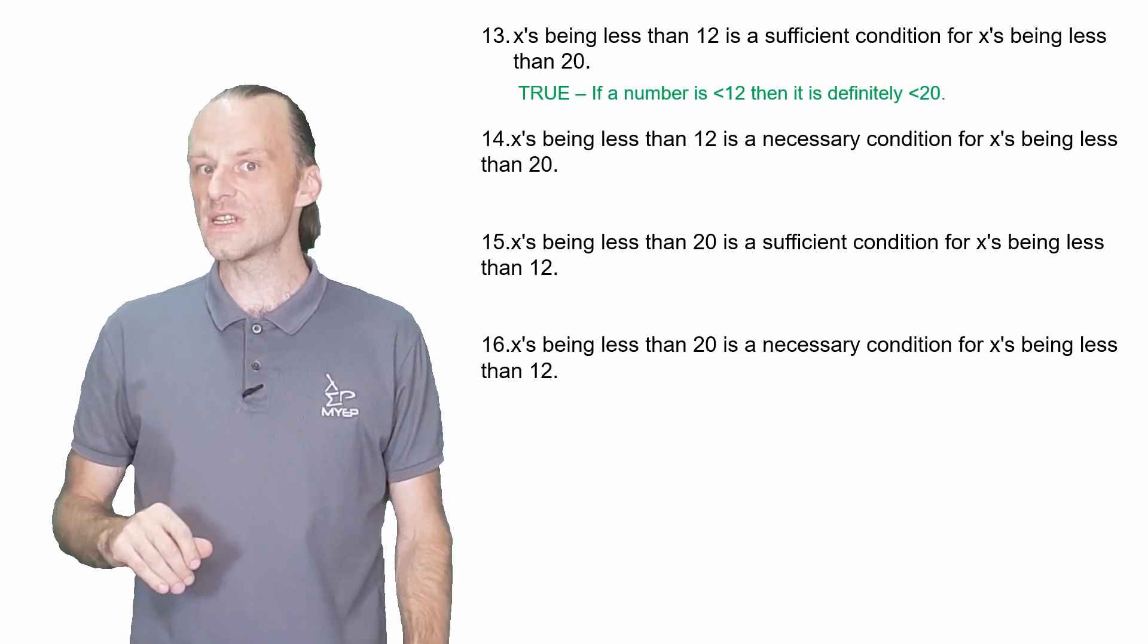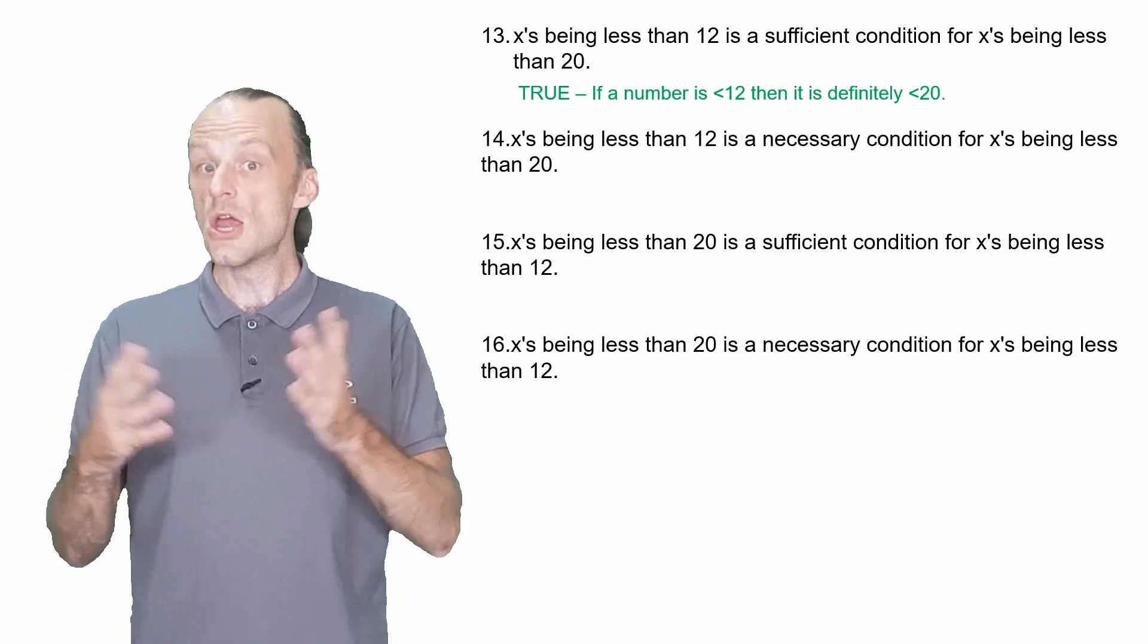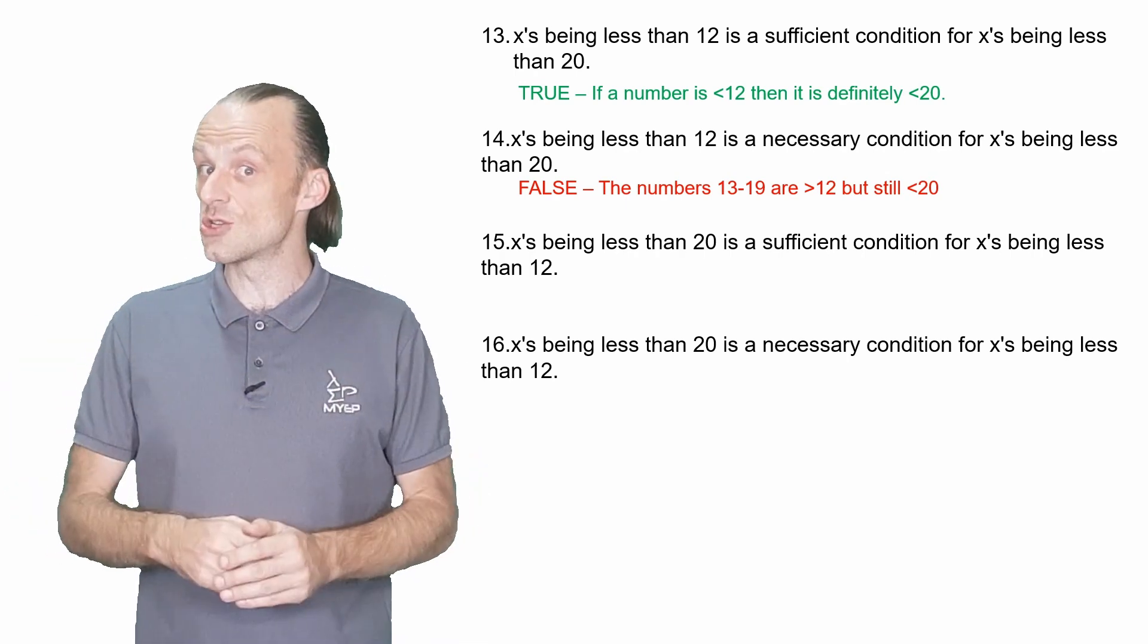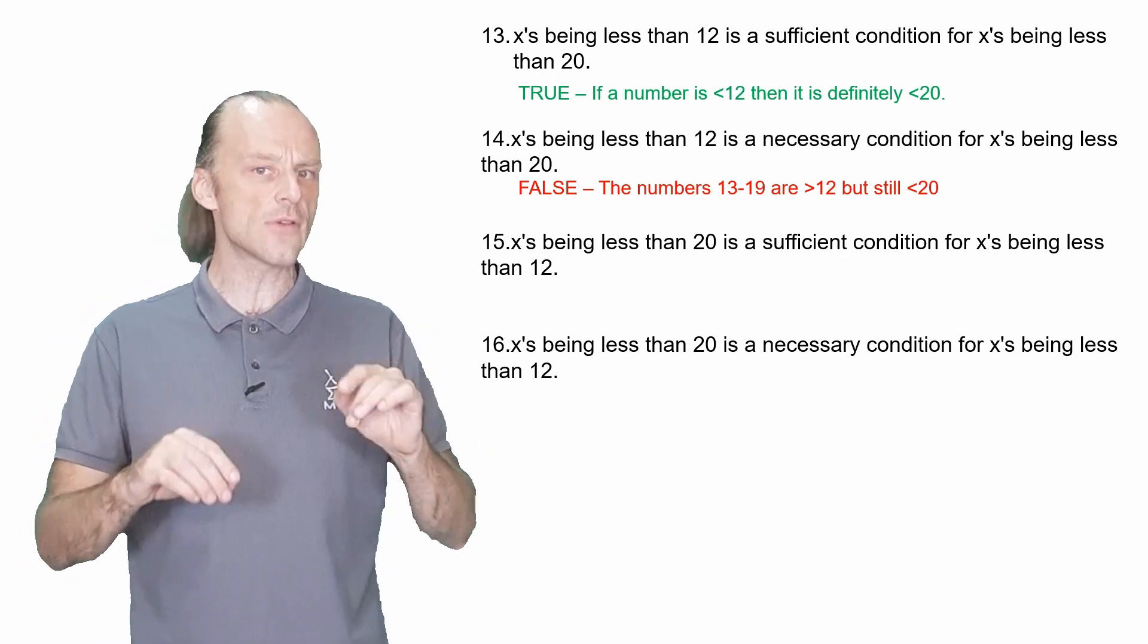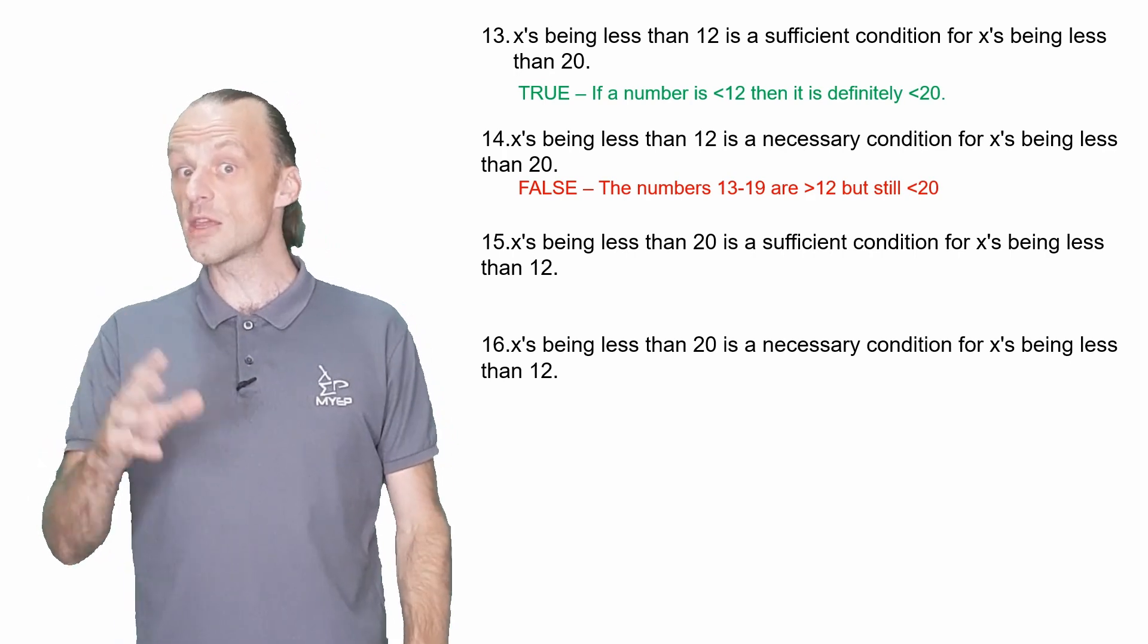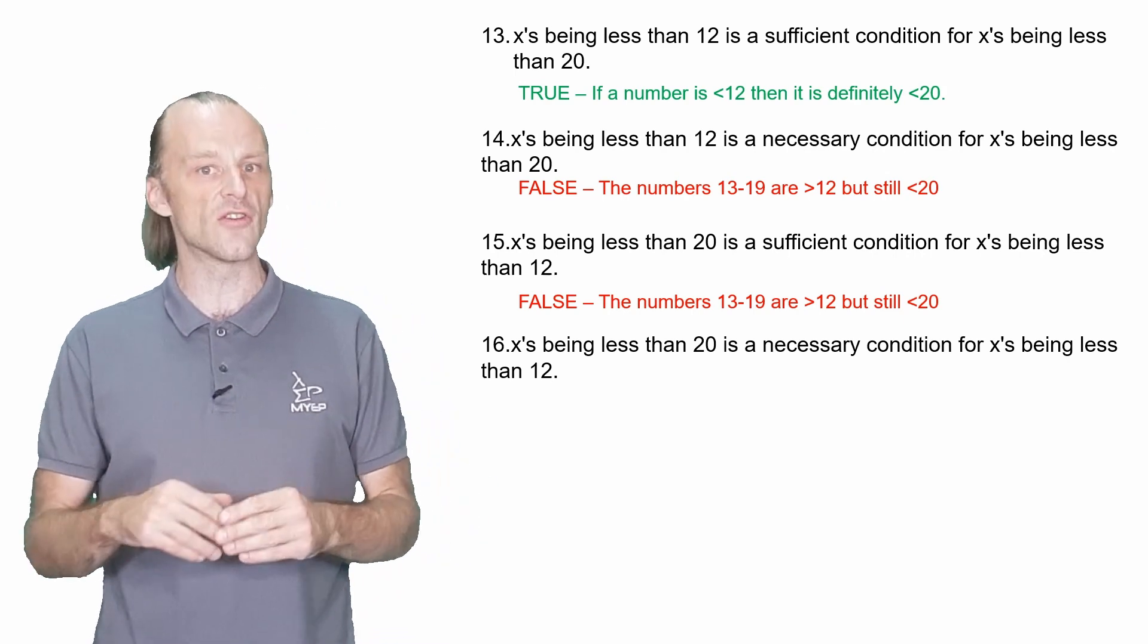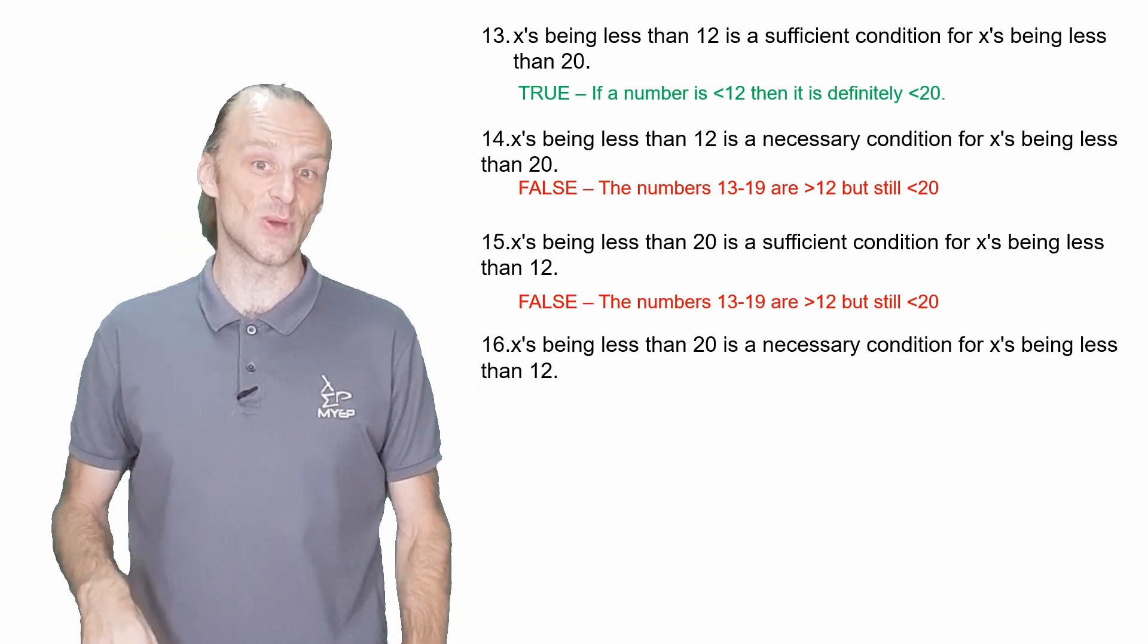What about question 14? Is being less than 12 necessary for being less than 20? No, it's not. The numbers 13, 14, 15 and so on are not less than 12, but they are still less than 20. So A being false does not guarantee that B is false in this case. The same argument can apply for number 15. If X is less than 20, this does not guarantee that X is less than 12 because 13 to 19 are not less than 12, but still less than 20.